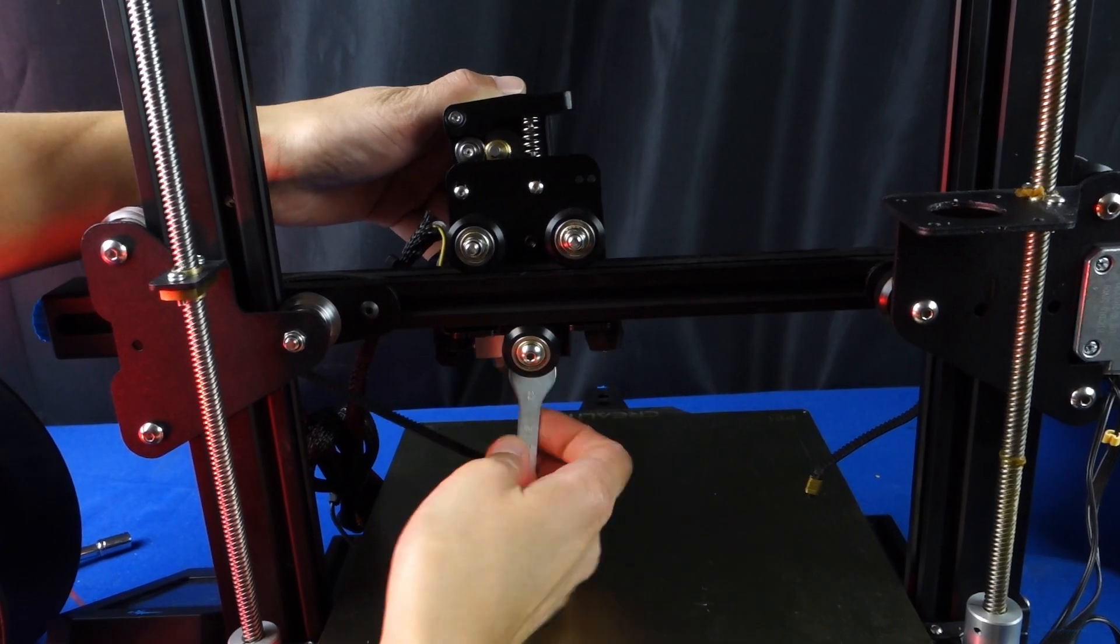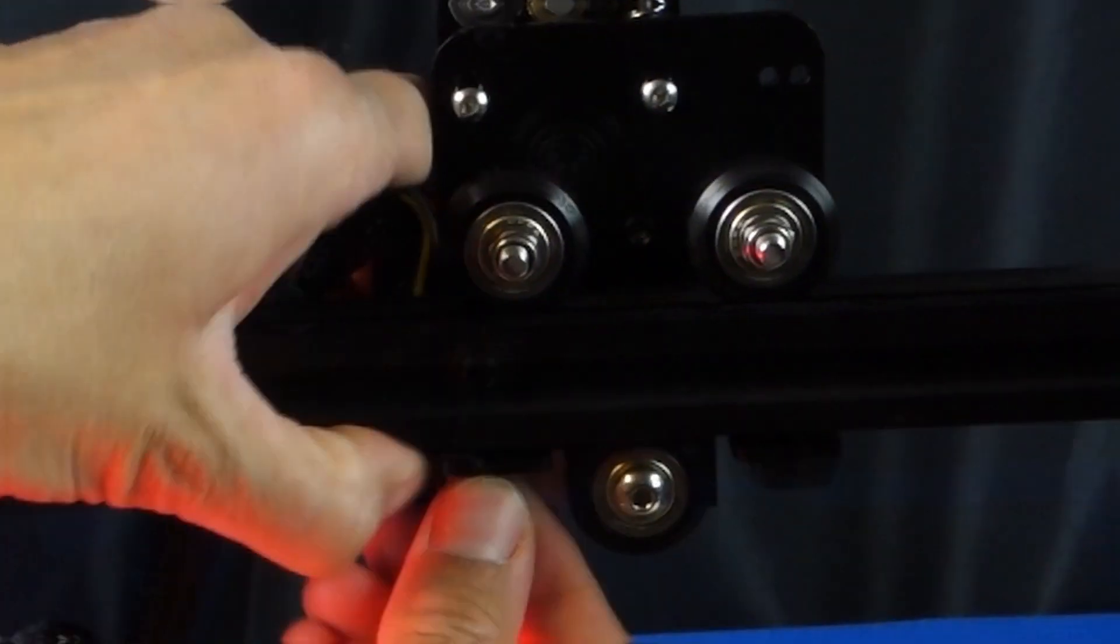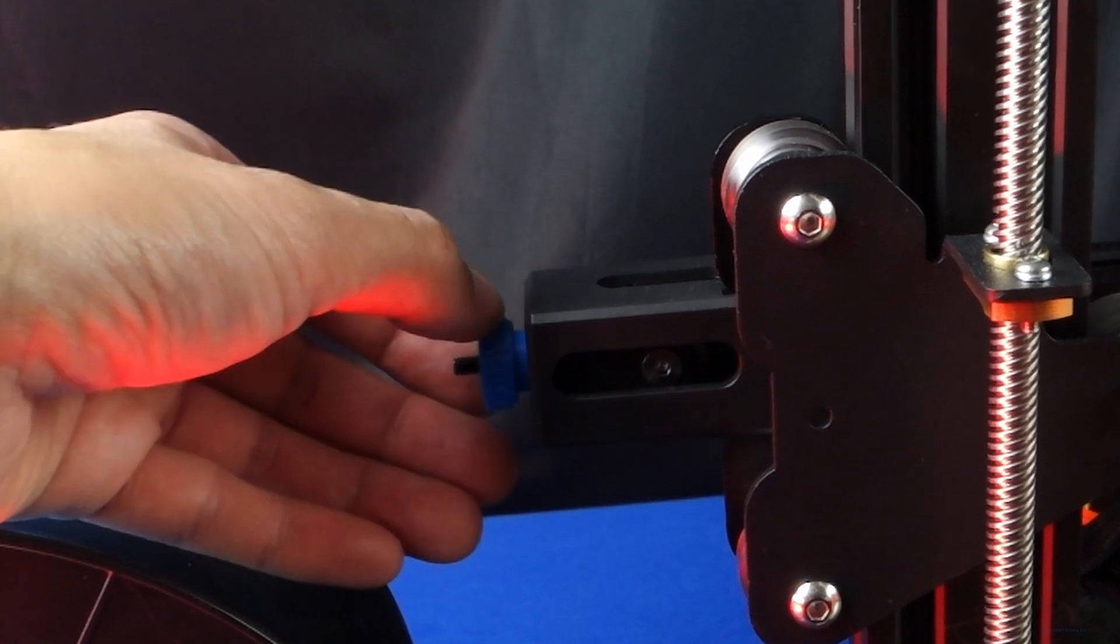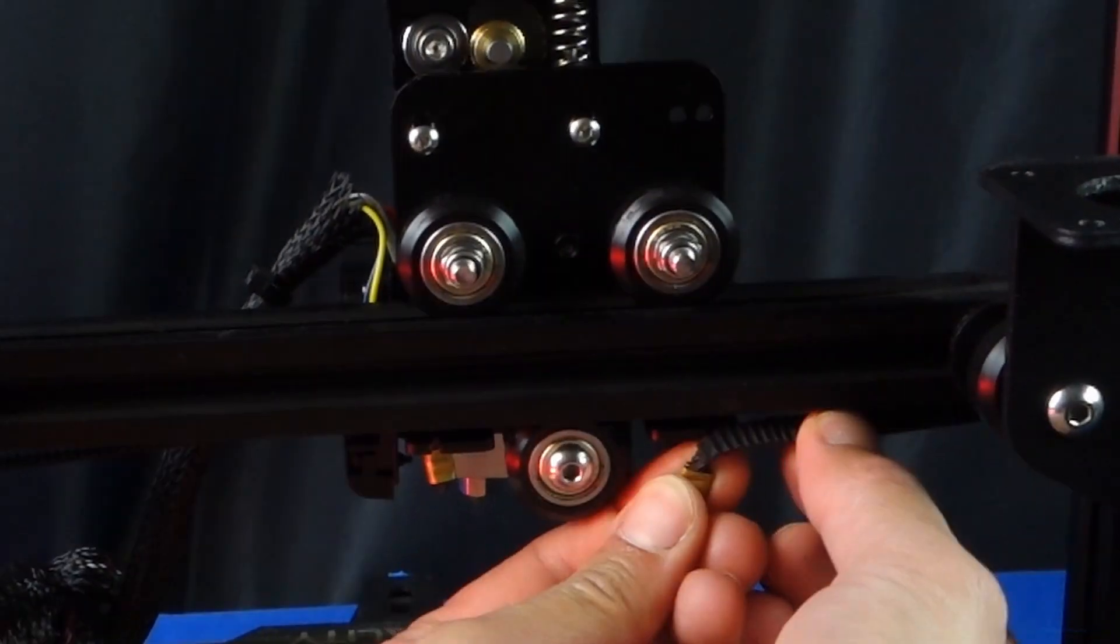I currently have a PDF guide which goes through this process on my main website. When reattaching the timing belts loosen the belt tightener slightly so that you have a little more slack on the belt and retighten afterwards.